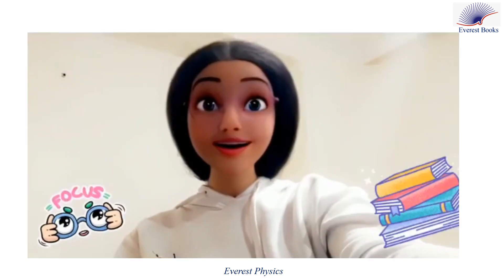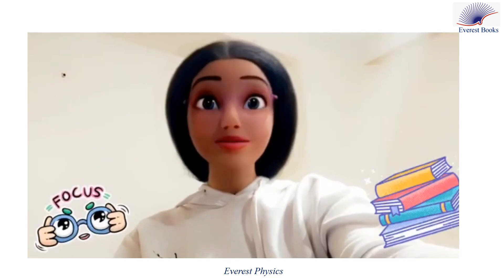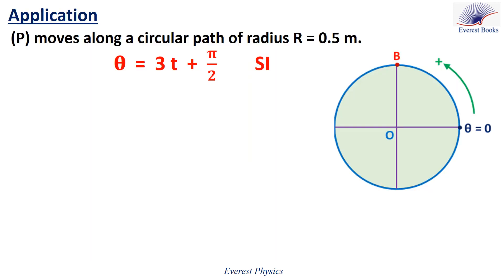Now let's solve an application. A particle P moves along a circular path of radius R equals 0.5 meters. The angular abscissa of P is given by 3T plus π over 2, in SI units.